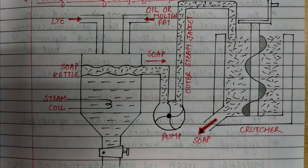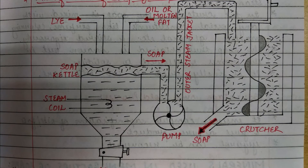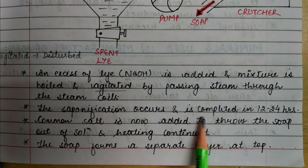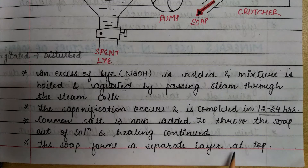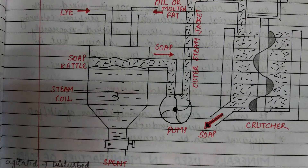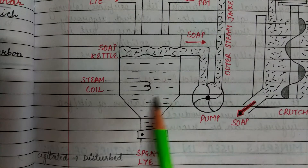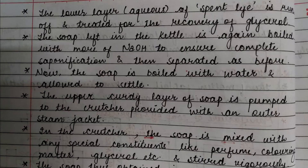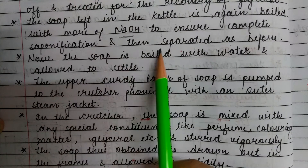This is the steam coil, which passes heat to the system. Saponification occurs and is completed in 12 to 24 hours. Common salt is then added to throw the soap out of solution. The soap forms a separate layer at the top, while the lower aqueous layer of spent lye is run off and treated for the recovery of glycerol. The soap left in the kettle is boiled again with more NaOH to ensure complete saponification, then separated as before.